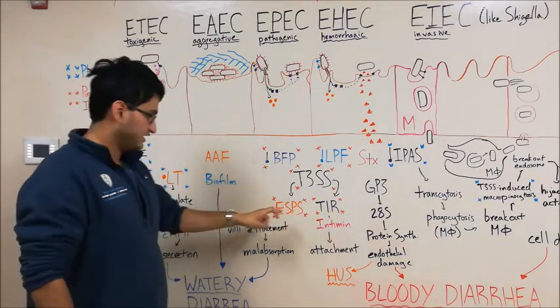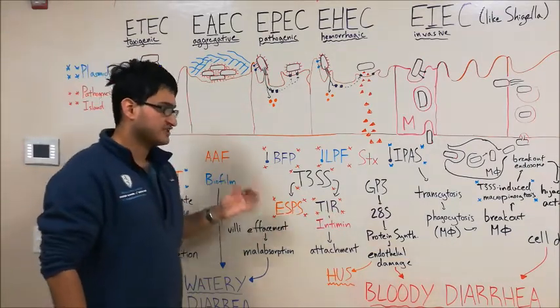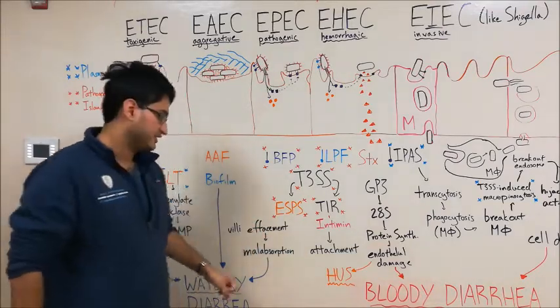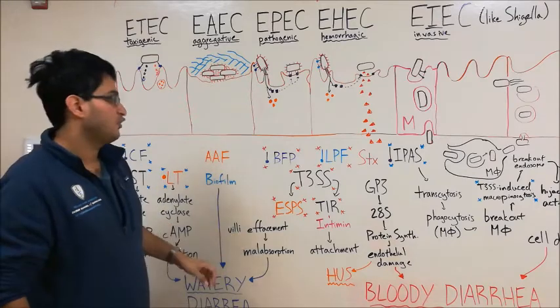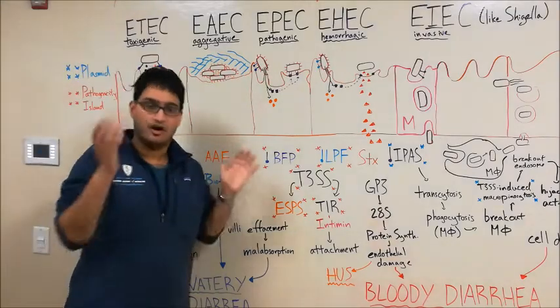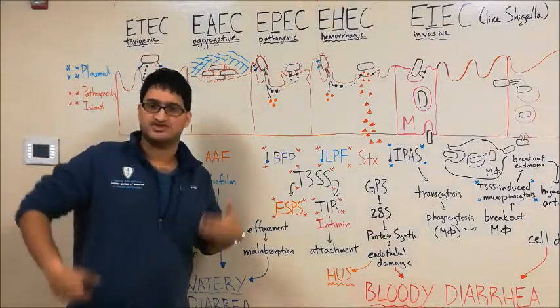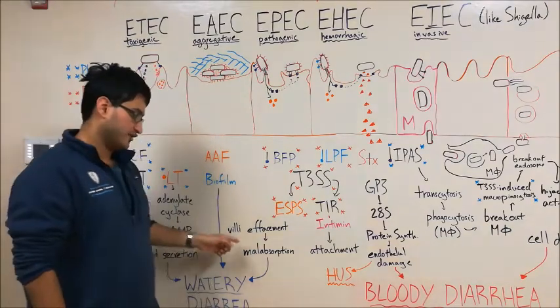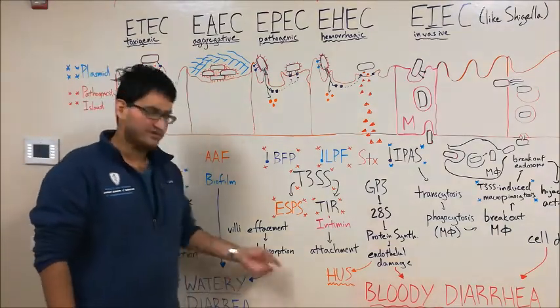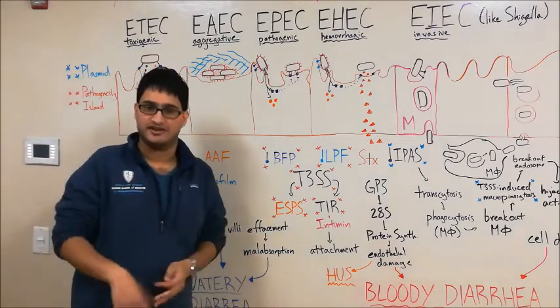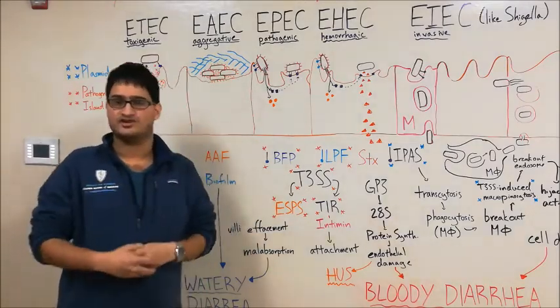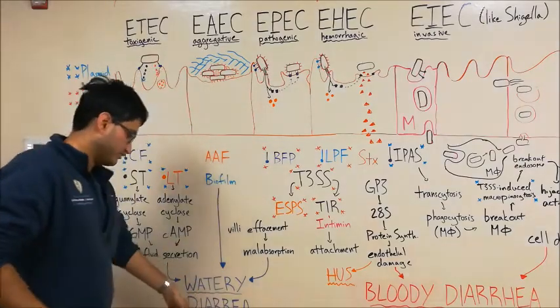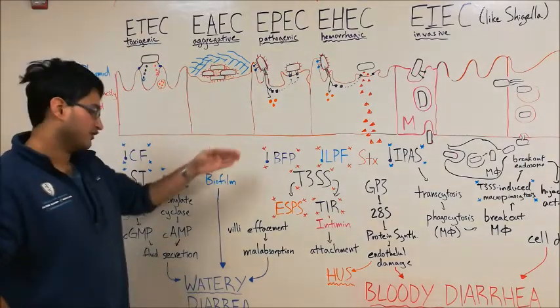The ESPs are going to affect the actin cytoskeleton of the enterocyte, leading to effacement of the villi. Normally villi are finger-like projections off the enterocyte that increase surface area, and these are really important for absorption of nutrients. When these villi are effaced, there's malabsorption of nutrients, and the ability of these nutrients in the GI lumen exerts an osmotic effect that draws water into the GI tract, leading to watery diarrhea.